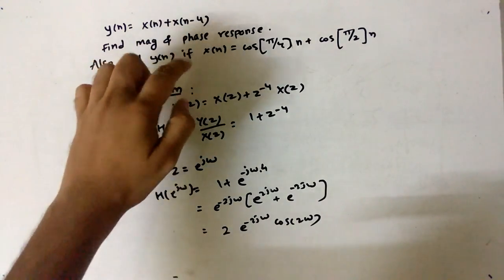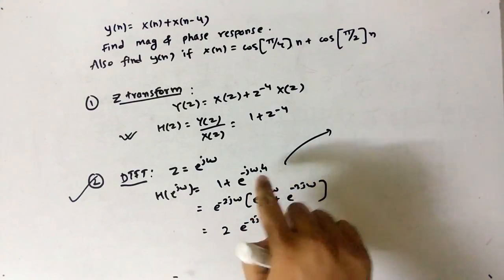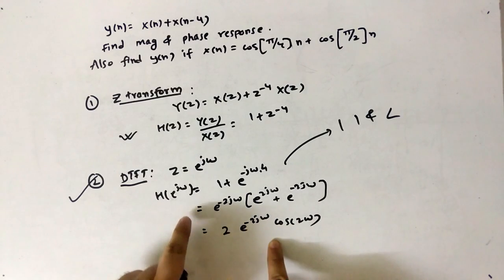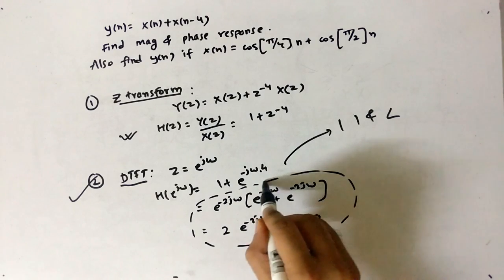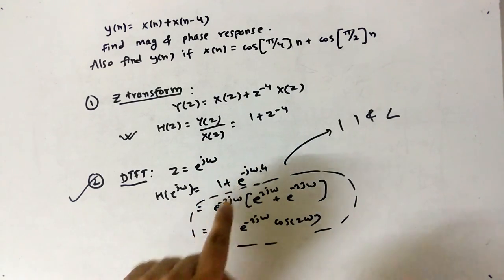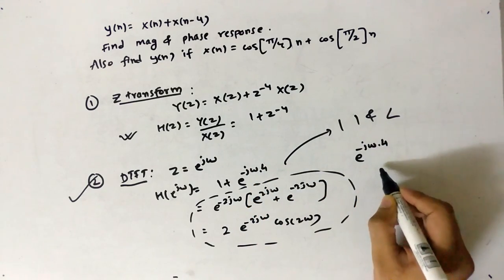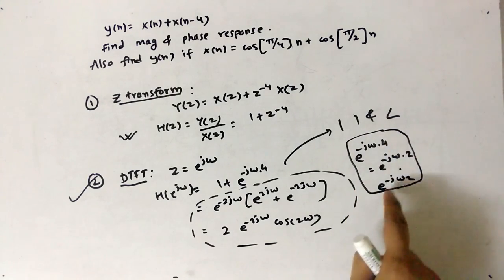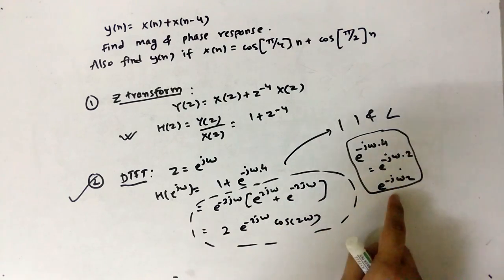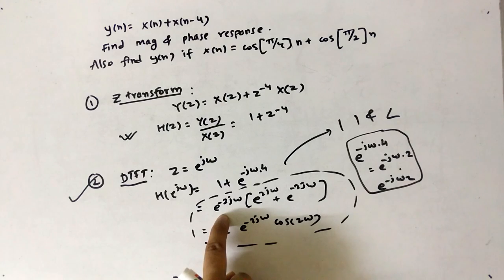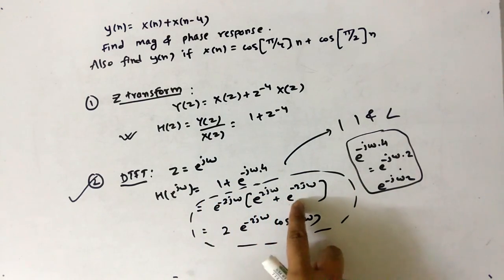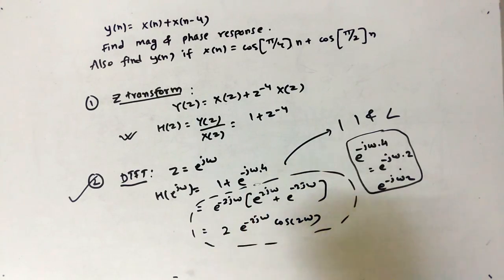We need to convert the equation into some magnitude and some angle. The important steps require special care. We split e^(-j4ω) into e^(-j2ω) · e^(-j2ω), then take e^(-j2ω) as a common factor. The bracket becomes e^(j2ω) + e^(-j2ω), which sets up the use of the cosine identity.